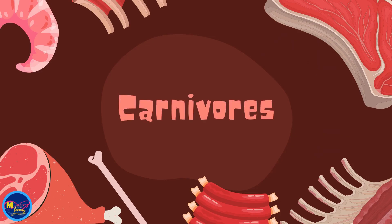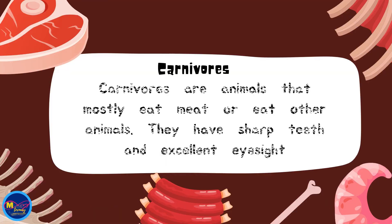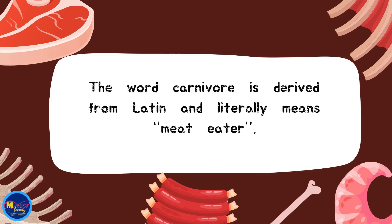Carnivores are animals that mostly eat meat or eat other animals. They have sharp teeth and excellent eyesight. The word carnivore is derived from Latin and literally means meat eater.